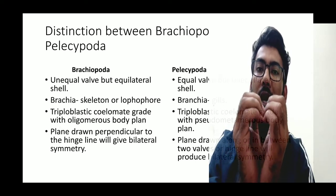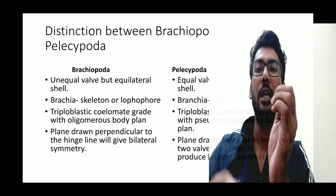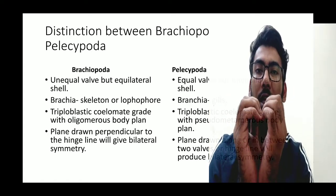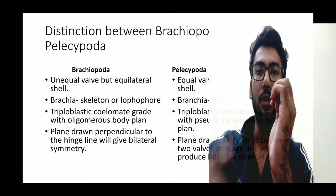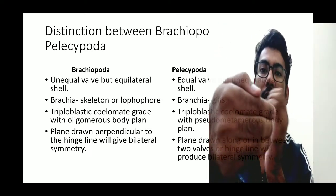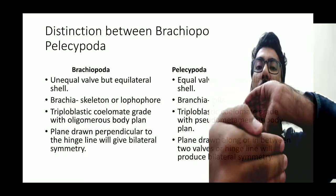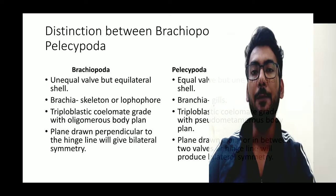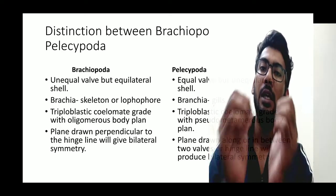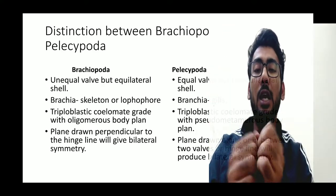When we pass a plane perpendicular to the hinge line — that is, across the hinge line — we get bilateral symmetry in Brachiopoda. One section on each side of that plane will be bilaterally symmetrical to the other. So bilateral symmetry is obtained by passing a plane perpendicular to the hinge line.